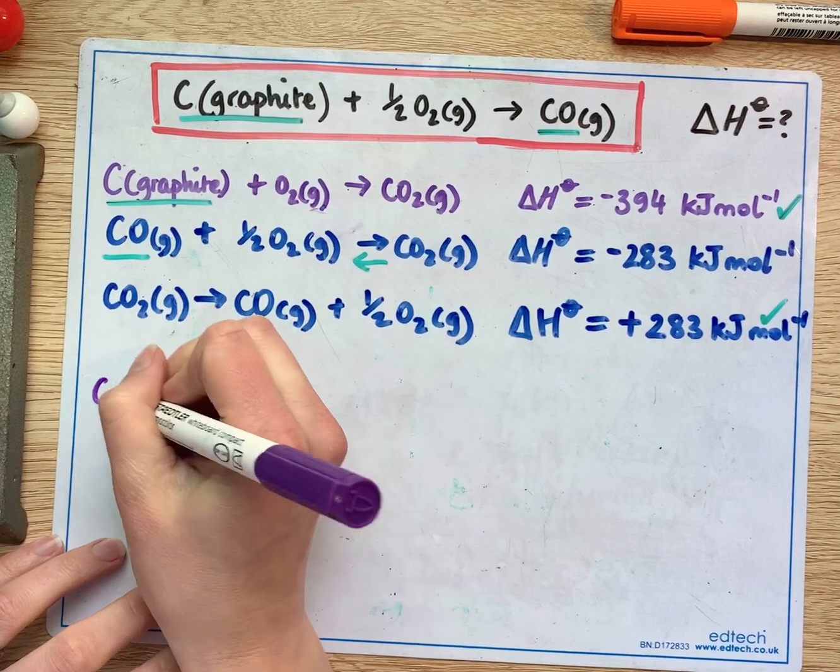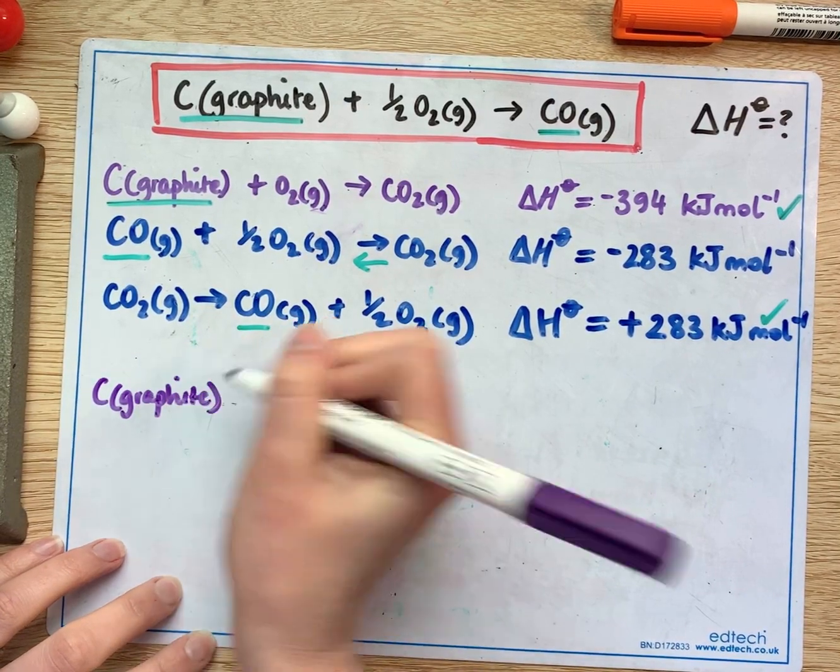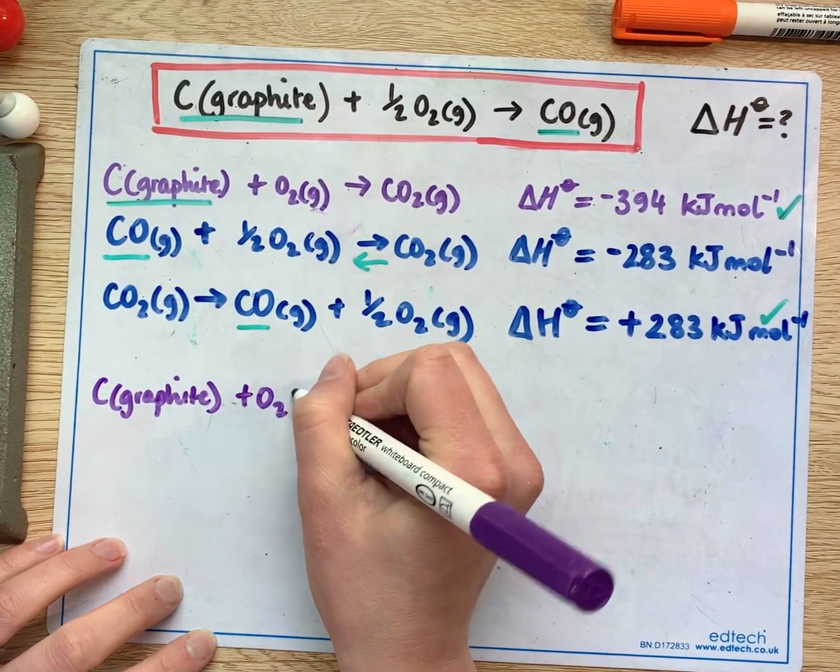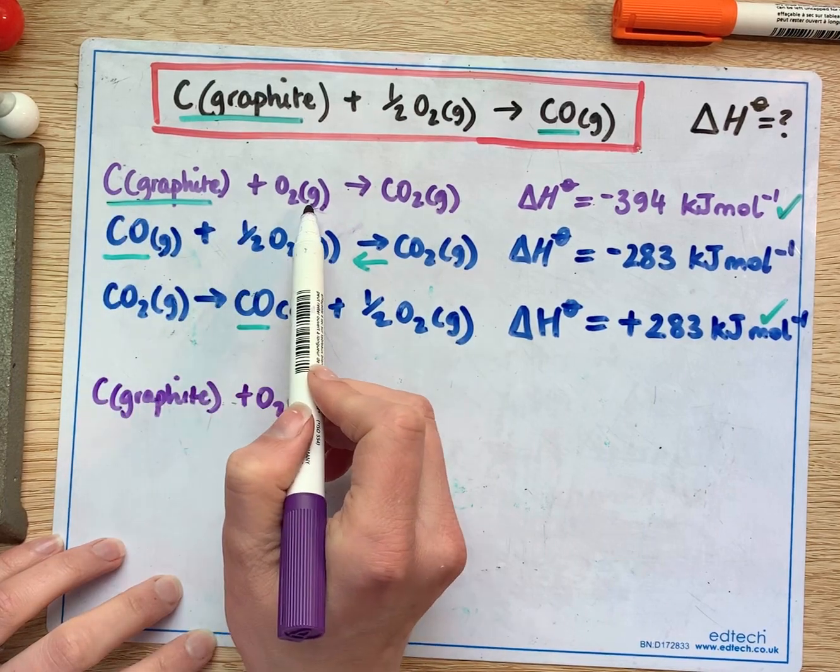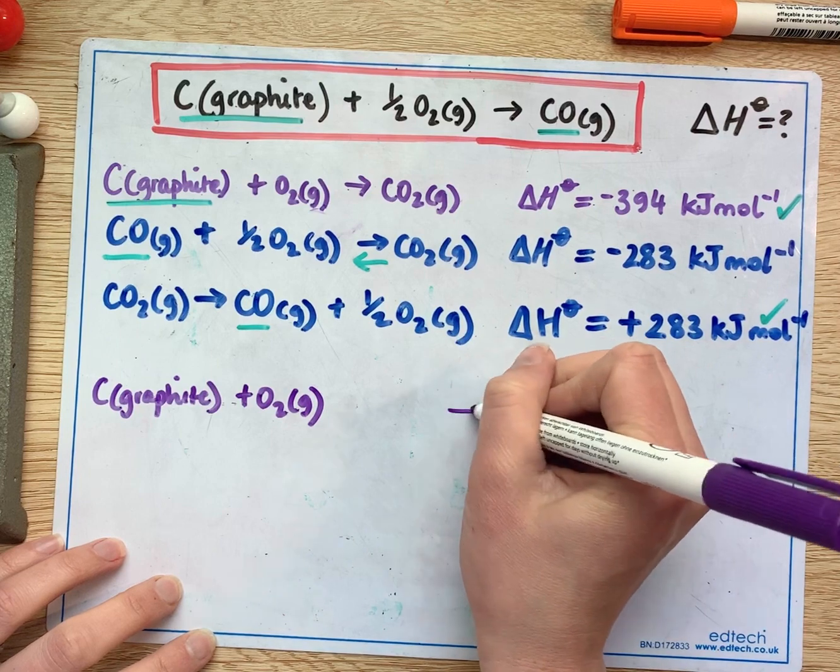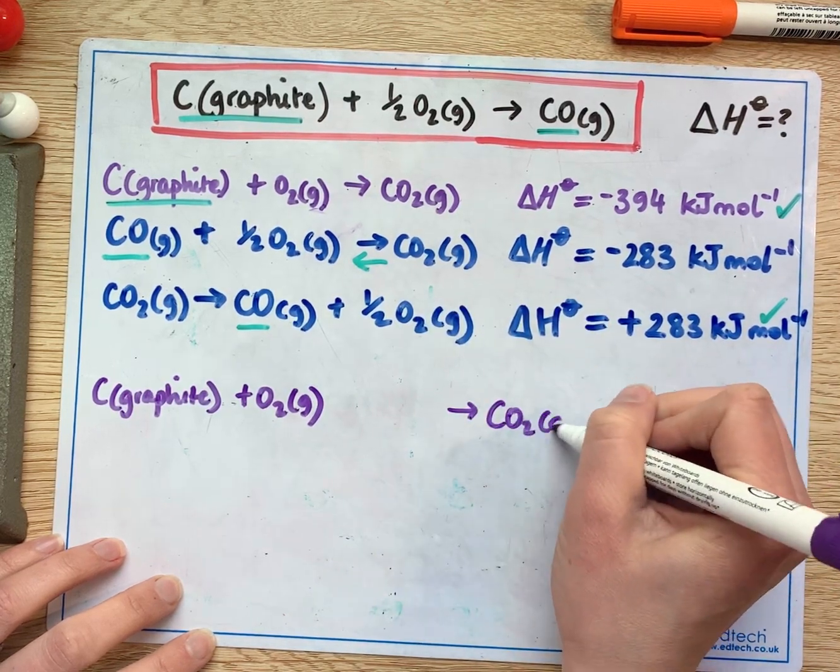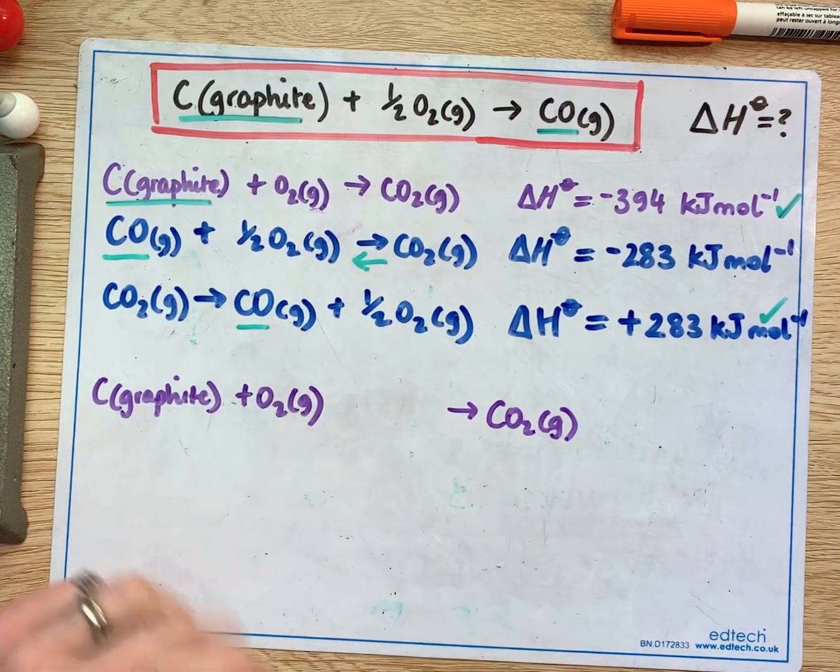So we have carbon which is in the form of graphite here and oxygen gas so I collect together all of my reactants from here and then I write all my products.